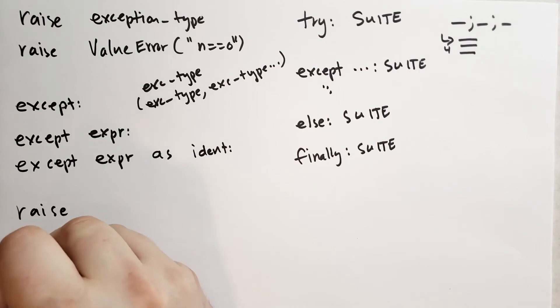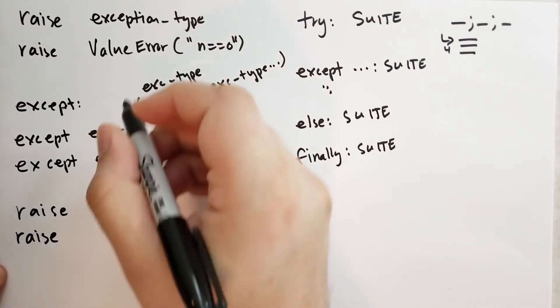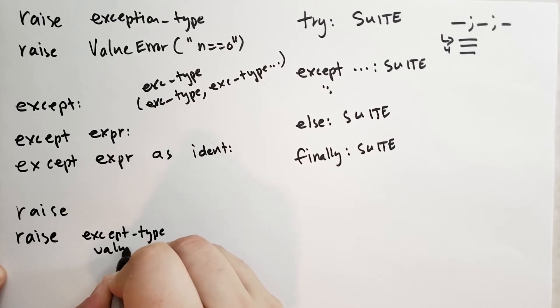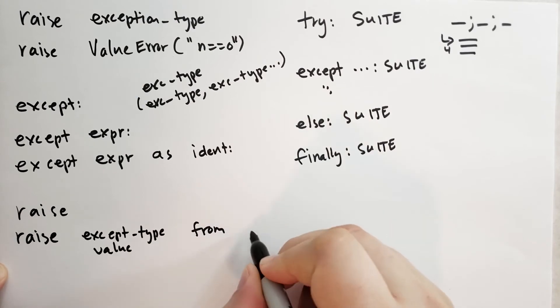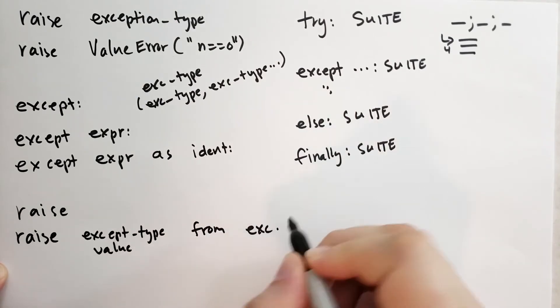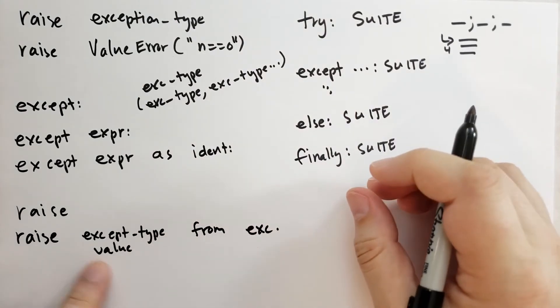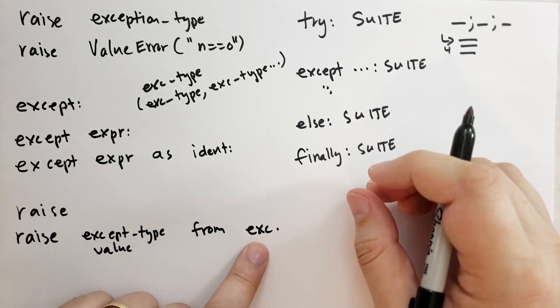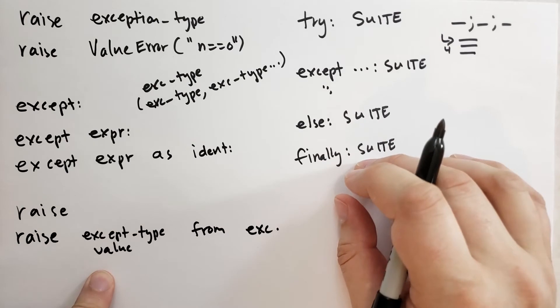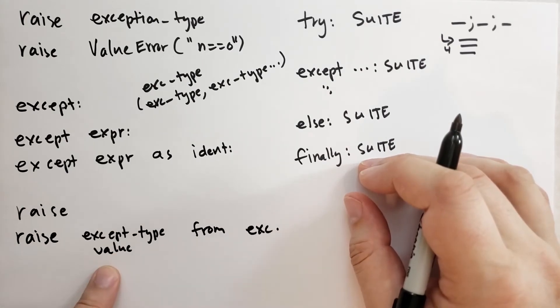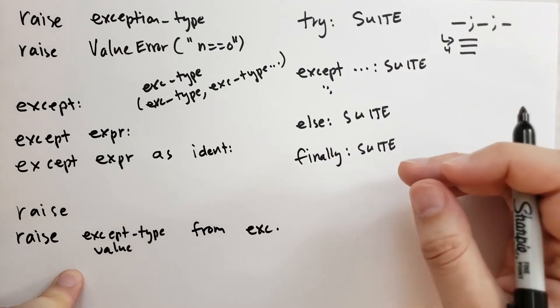You could also call raise with the same kind of exception type or exception value and then say from and another exception. What this will do is create a new exception that's chained to the previous exception and raise that exception instead. I discourage chaining exceptions. It's kind of annoying to have an exception with like 30 exceptions that are chained to it. So if you don't need to do it, don't bother doing it.